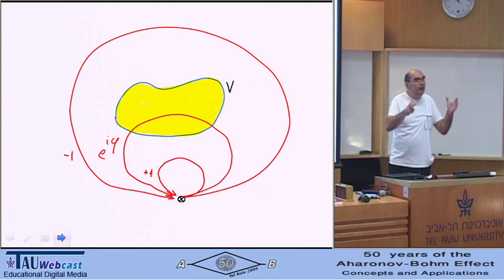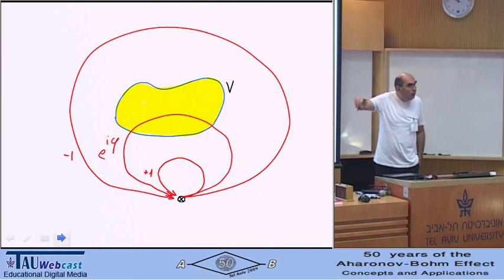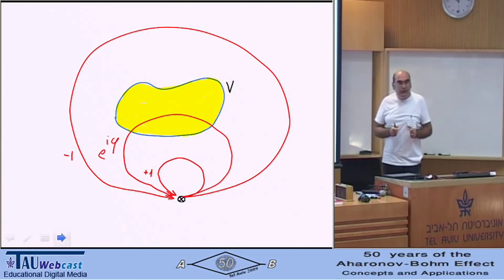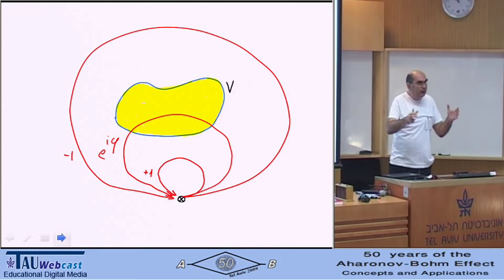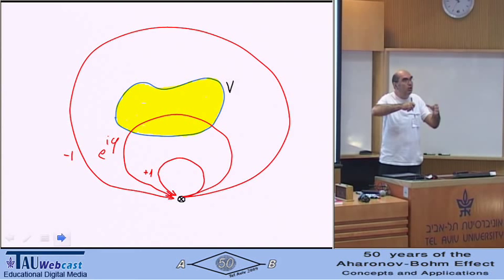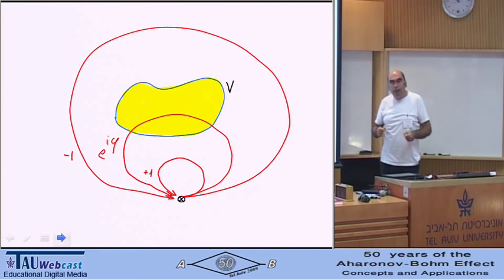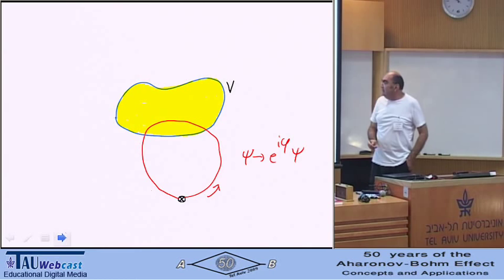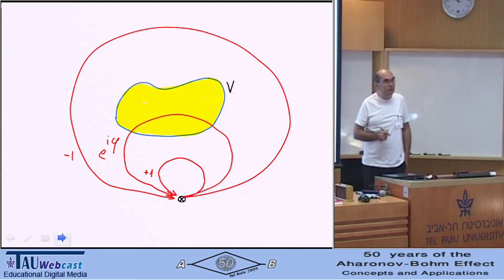Now, I will try to look at the problem in the adiabatic limit when the fluxon moves slowly, slowly, slowly and when the electron is in a non-degenerate energy eigenstate. Well, if those are the conditions and I move slowly and it's non-degenerate, by the time I come out, I do not excite the state of the electron. So the electron remains in the same state, psi. All it can happen is to acquire a phase. The question is, what is the phase?